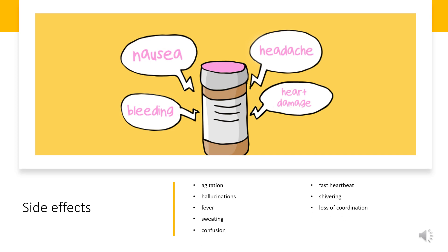Side effects: Agitation, hallucinations — seeing things or hearing voices that do not exist — fever, sweating, confusion, fast heartbeat, shivering, severe muscle stiffness or twitching, loss of coordination, nausea, vomiting, or diarrhea.